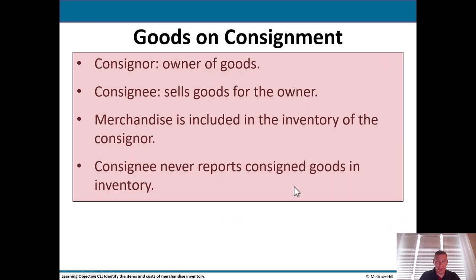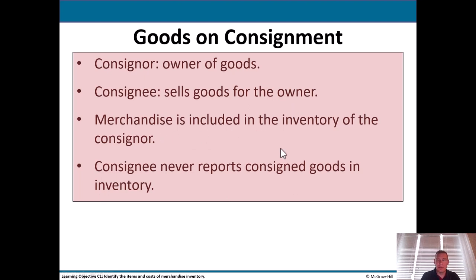Goods on consignment — you may have heard of consignment stores. The consignor is the owner of the goods; think of that as the person who goes into the consignment store and says, 'I've got some stuff I want to sell, can you try to sell it for me?' The consignee sells the goods for the owner — that's the shop itself. Merchandise is included in the inventory of the consignor, not the shop. When you walk into a consignment store, that's not their inventory; they don't own it, so they're not listing it on their books. The consignee never reports consigned goods in inventory.